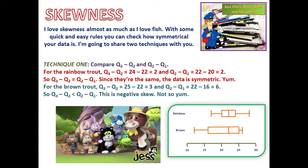For the brown trout, Q3 minus Q2 is 3, and Q2 minus Q1 is 6. So Q3 minus Q2 is less than Q2 minus Q1. This is negative skew. Not so yum.